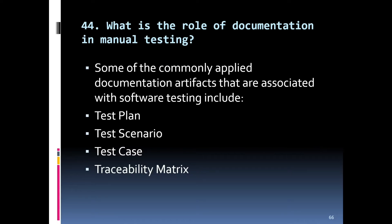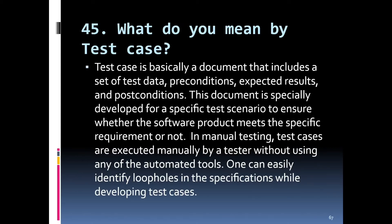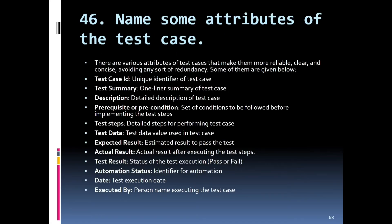What is the role of documentation in manual testing? Commonly applied documentation artifacts associated with software testing include test plans, test scenarios, test cases, and traceability metrics. A test case is a document that includes a set of test data, preconditions, expected results, and post-conditions. It is developed for specific test scenarios to verify whether the software meets requirements. In manual testing, test cases are executed manually by the tester without any automated tools, and loopholes in specifications can be identified while developing them.